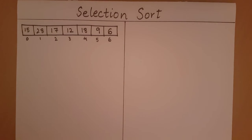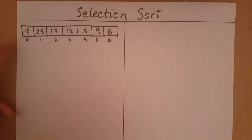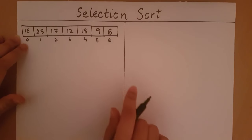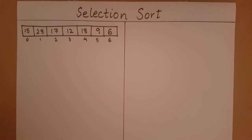This is our array, currently in some random order — it is not sorted. What selection sort does is look at the entire array and select the smallest element. It will check from the 0th element all the way till the 6th element and select the smallest element.